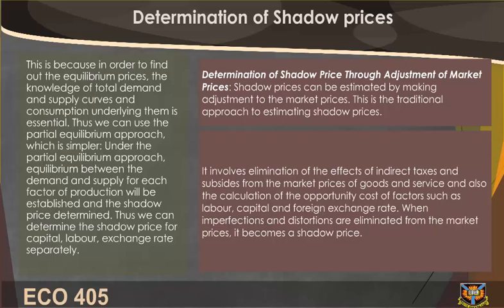Determination of Shadow Price through Adjustment of Market Prices. Shadow prices can be estimated by making adjustments to market prices. This traditional approach involves elimination of the effects of indirect taxes and subsidies from market prices, and calculation of the opportunity cost of factors such as labor, capital, and foreign exchange rate. When imperfections and distortions are eliminated from market prices, the result becomes a shadow price.